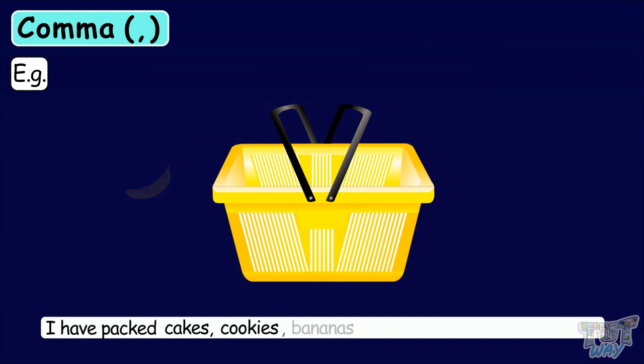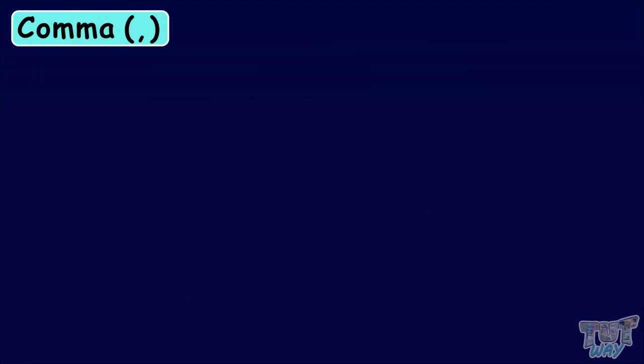This is a sentence with breaks in it, like cakes, cookies, bananas. There are breaks between the naming words. These breaks, or pauses, are represented in writing with the help of commas. We give a pause when we represent a list of things, and that pause is represented by a comma.